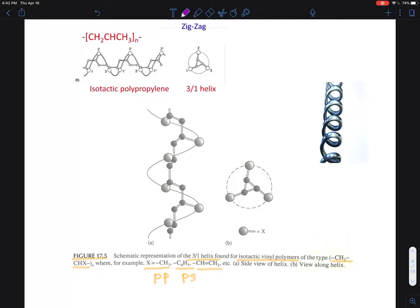isotactic polystyrene, and even this one, which is a little hard to imagine. This must be from CH2 double bond CH with a CH double bond CH2, right? This is a diene, butadiene.